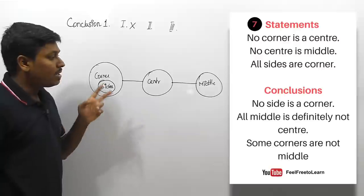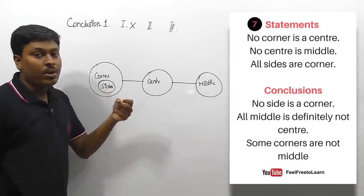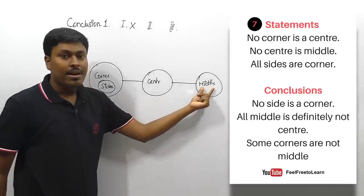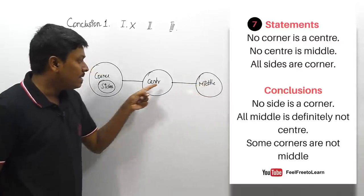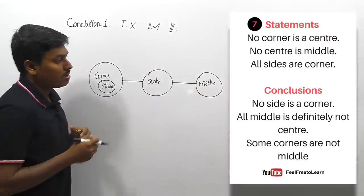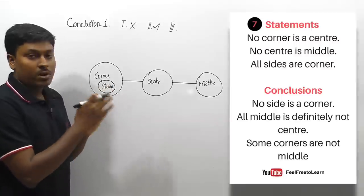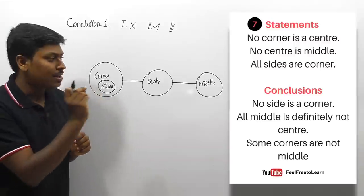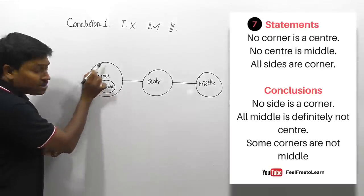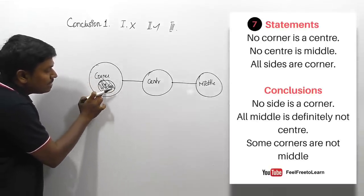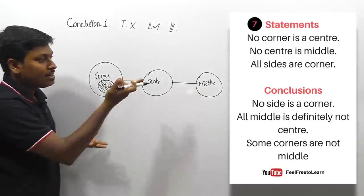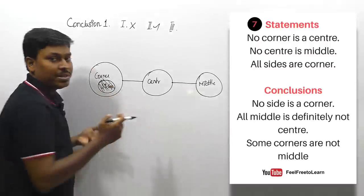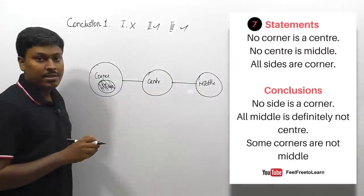Conclusion two: 'all middle is definitely not centers' — we know no center is middle, so all middle in this region is definitely not center, which is correct. Conclusion two follows. Conclusion three: 'some corners are not middle' — this is a 'some not' concept, so read the first two words: 'some corners.' Some corners will be this region, and this region is not middle — exactly correct. Conclusion three follows. So the answer is two and three follow.